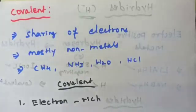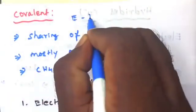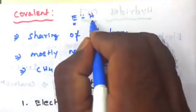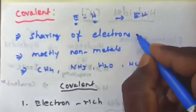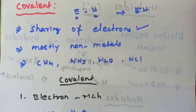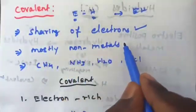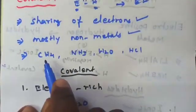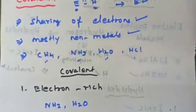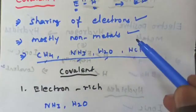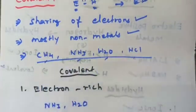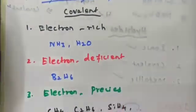Covalent hydrides are compounds in which hydrogen is attached to another element by sharing of electrons — mutual sharing of electrons. These are the most common examples of covalent hydrides in non-metals. Covalent hydrides are mostly formed by non-metals.